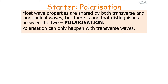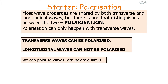Most wave properties are shared by both transverse and longitudinal waves, but there's one thing that distinguishes between the two: polarisation. Polarisation can only happen with transverse waves. It's important to note that transverse waves can be polarised and longitudinal waves cannot be polarised.